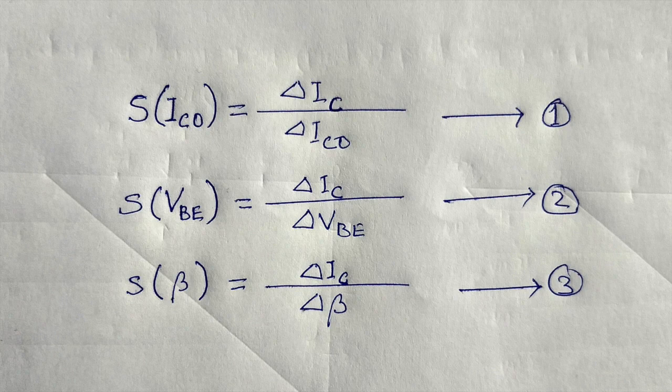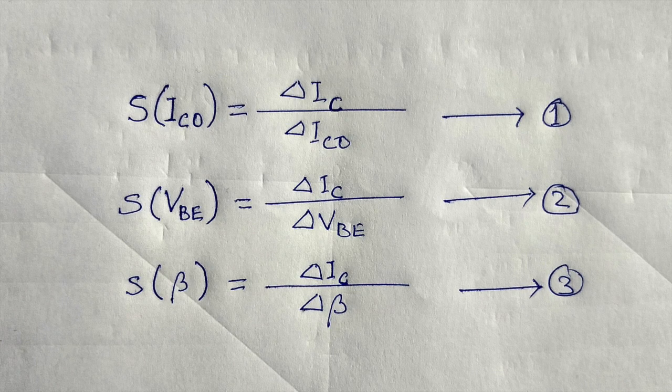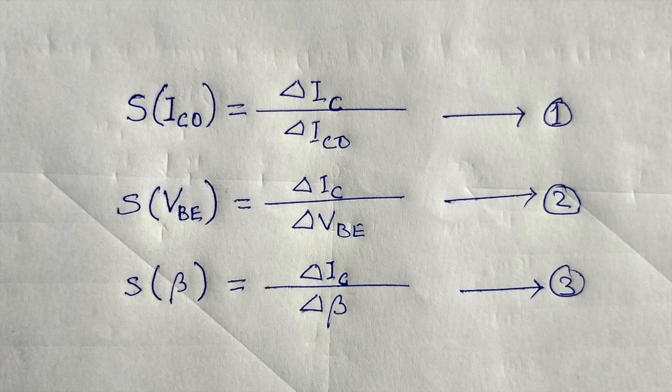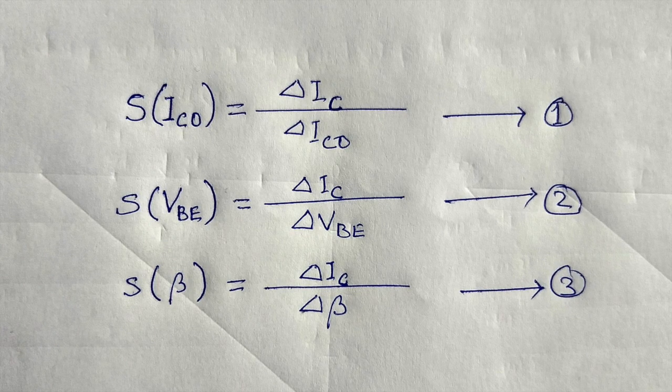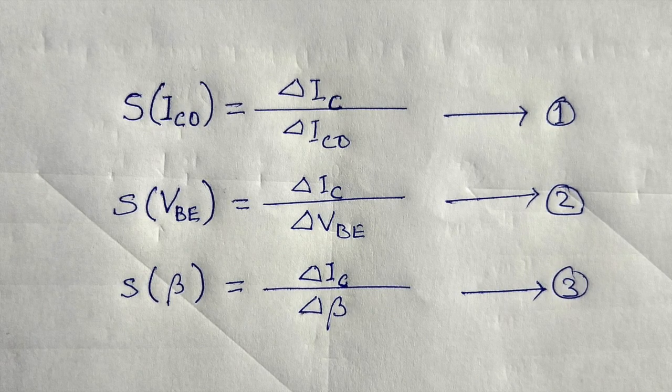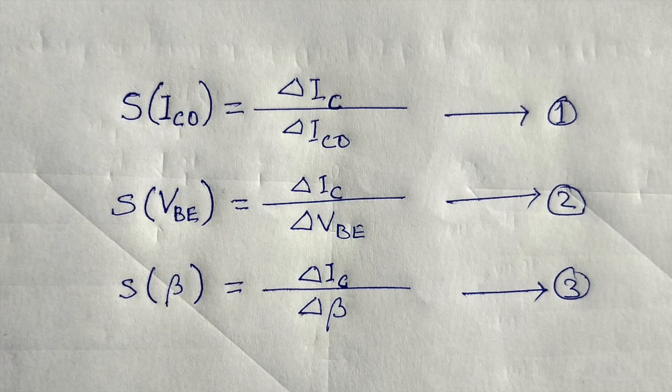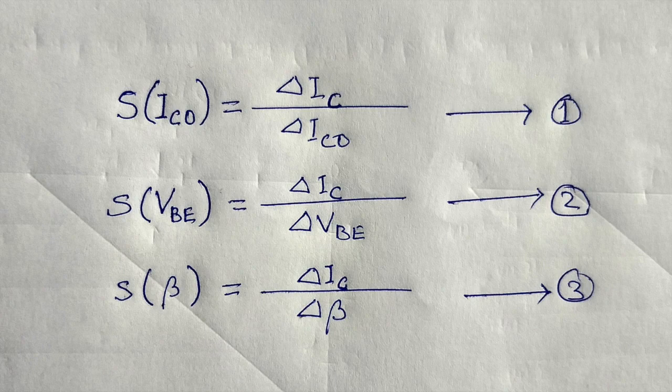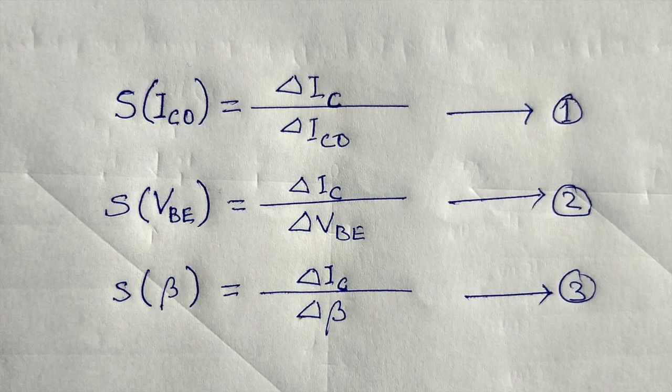Stability factor S is defined for each of the parameters affecting bias stability, as shown by equation 1, 2, 3. In each case, the delta symbol signifies change in that quantity. The numerator of each equation is the change in collector current, as established by the change in quantity of the denominator.